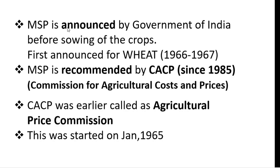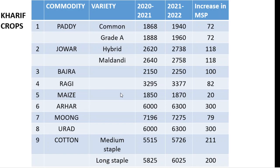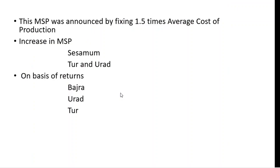This is the latest data regarding which the government has announced MSP for the Kharif season 2021 to 2022 — you can note it down or take a screenshot. MSP has been announced by fixing 1.5 times the average cost of production, following the announcement made in Union Budget 2018-19 that at least 1.5 times of all-India weighted average cost of production should be applied for Minimum Support Price.